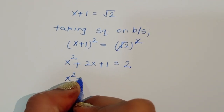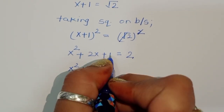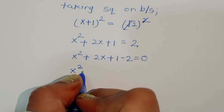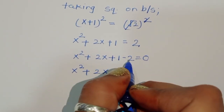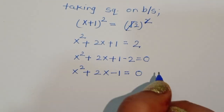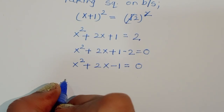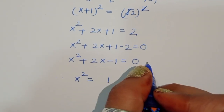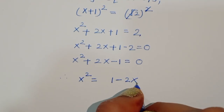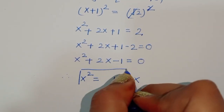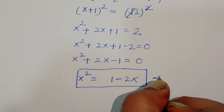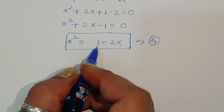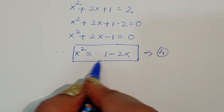So x squared plus 2x plus 1 minus 2 equals 0. Therefore x squared is equal to 1 minus 2x. This is equation number 4. We now need to take the square of this equation.